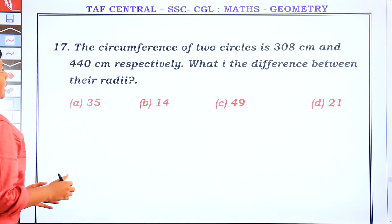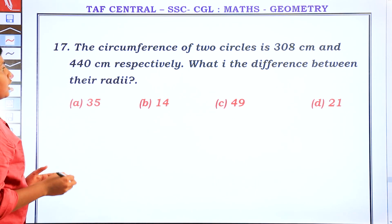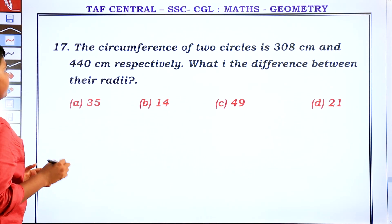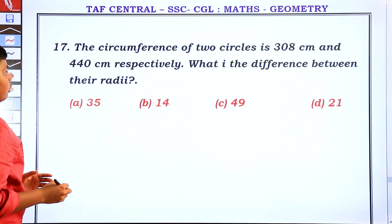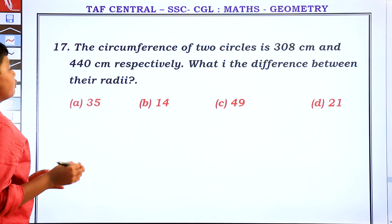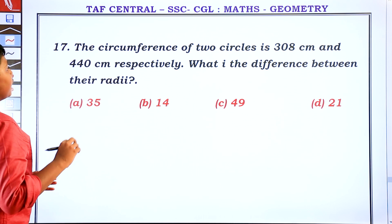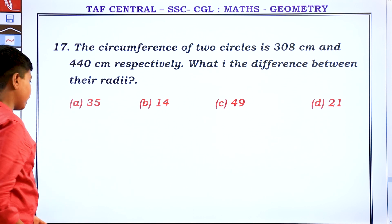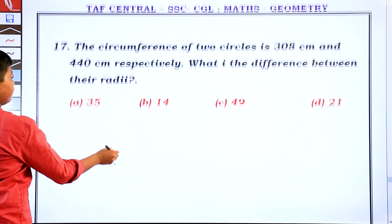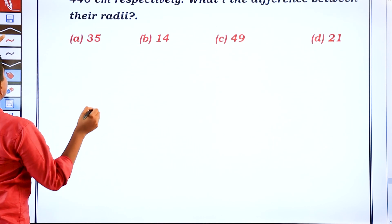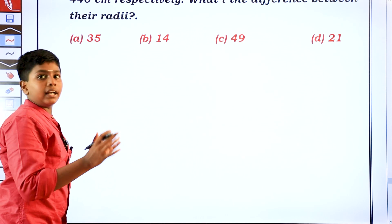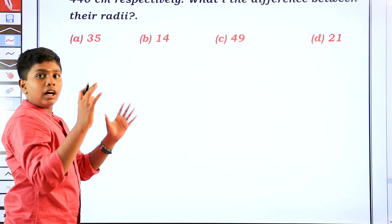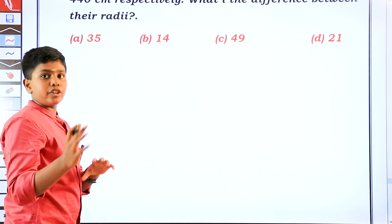The circumference of two circles is 308 cm and 440 cm respectively. What is the difference between their radii? There are two circles with these circumferences, and we need to find R1 minus R2.